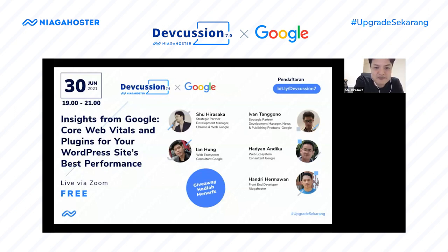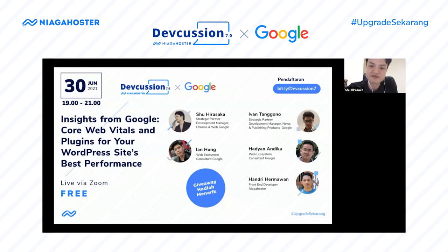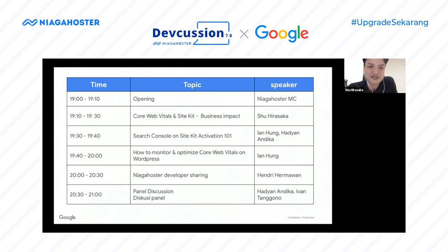Today we are going to talk about a few topics. I'll be covering two items: Core Web Vitals and Site Kit. Core Web Vitals is a set of three measurements for website performance, and Site Kit is Google's official plugin for WordPress to easily check the summaries of your website's key data. I'll go through the concepts of both items and how best you can benefit from them with a few case studies and a demo. My colleague Ian will provide a technical deep dive for tooling, and Halyan and Ivan will take you to exciting discussions later on.